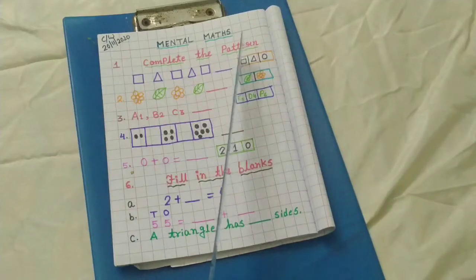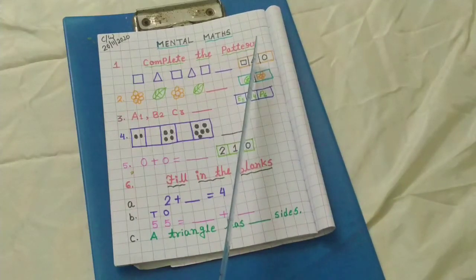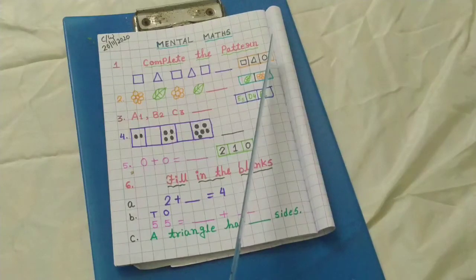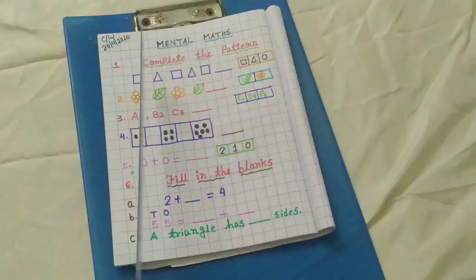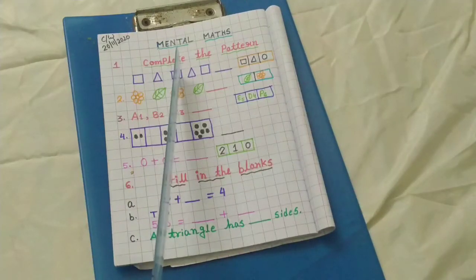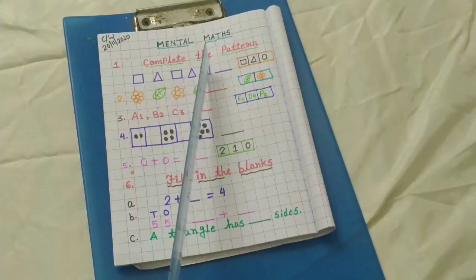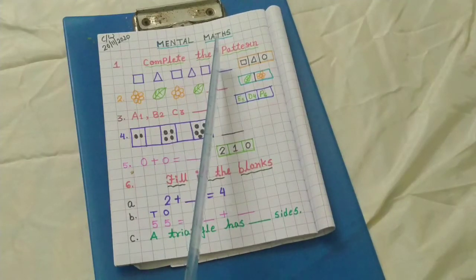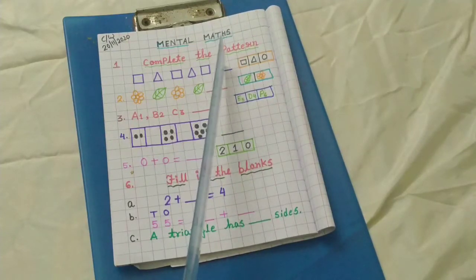Your options are square, triangle, and circle. So you have to think: first square is there, then triangle, again square, then triangle, then square. So which shape will come here? You have to think about it.